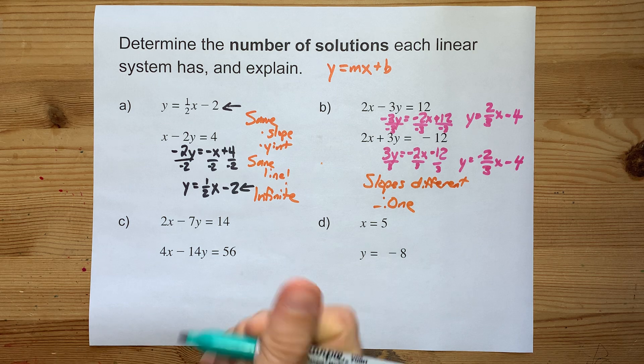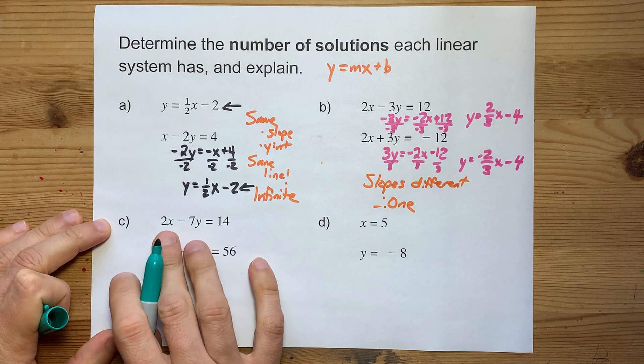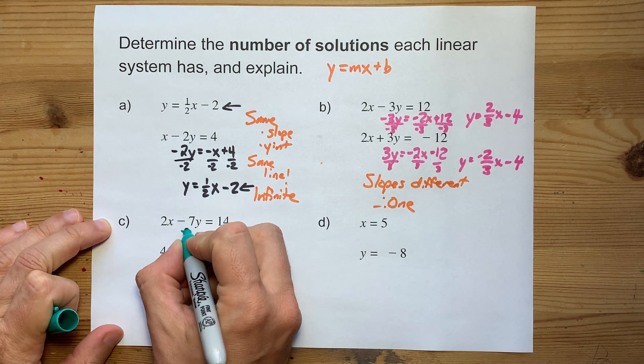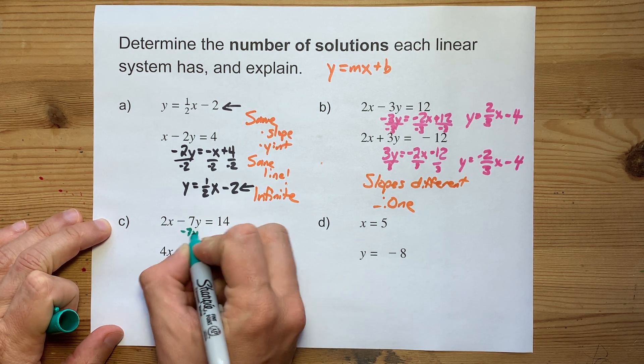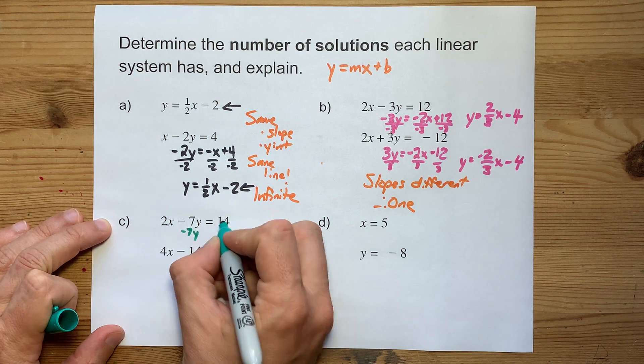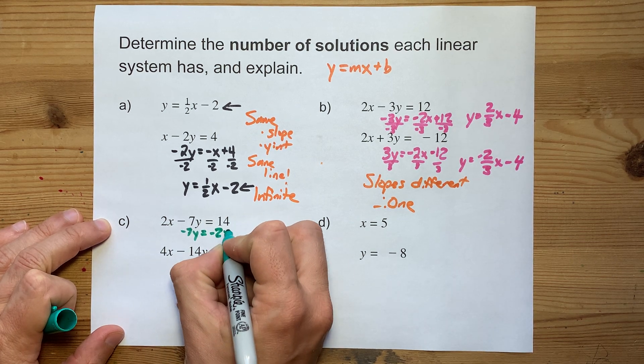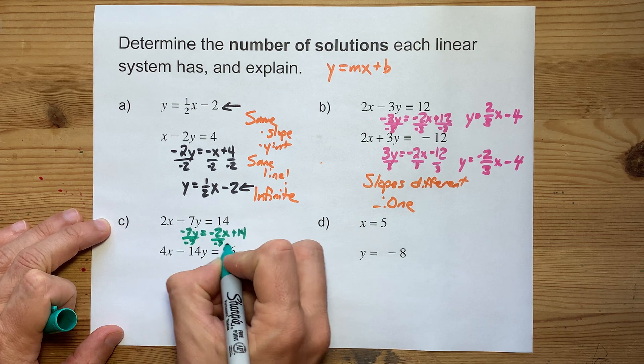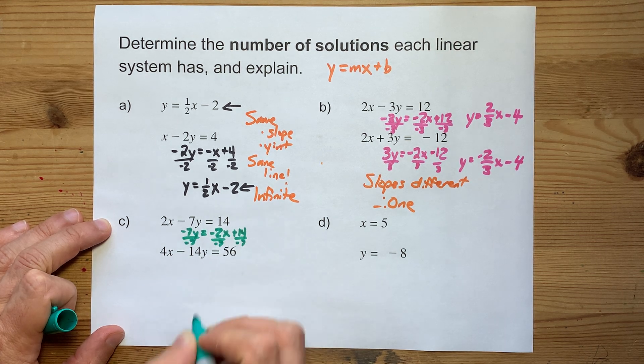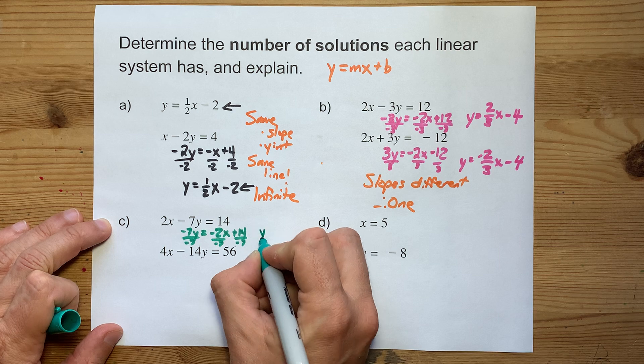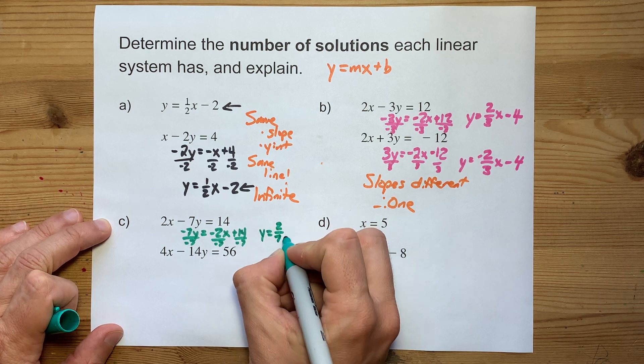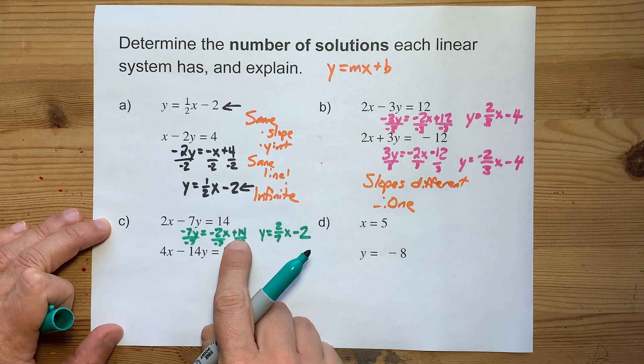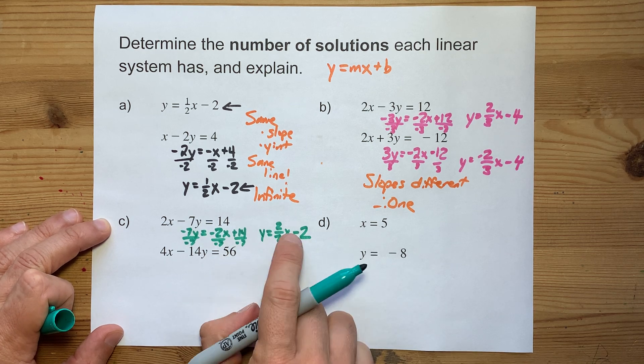I'm going to keep trucking. Hopefully, you'll feel like you can rearrange this to y equals mx plus b form very quickly by the end of this. Keep the y's on the left. 2x flips over to become minus 2x. Divide everything by negative 7 to get rid of the coefficient on y. y equals 2 sevenths x minus 2. That's positive 14 divided by negative 7.